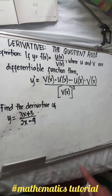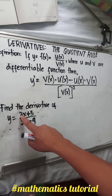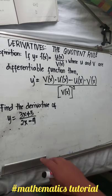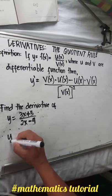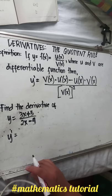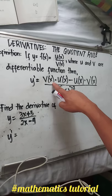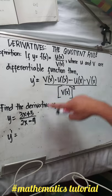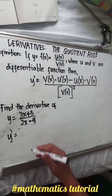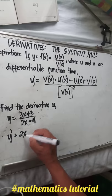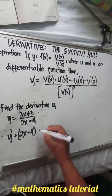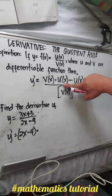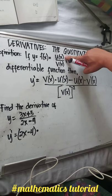Find the derivative of y equals (3x minus 5) over (2x minus 4). Based on the given definition, the derivative of the given function is v of x — that is the value of the denominator. So based on this example, the value of the denominator is 2x minus 4, times the derivative of the numerator.